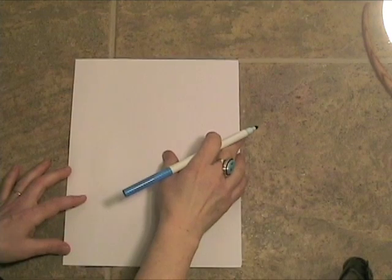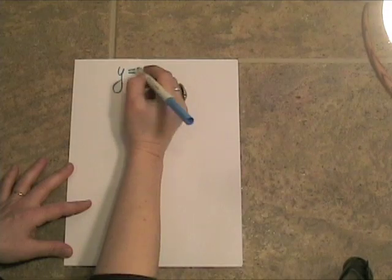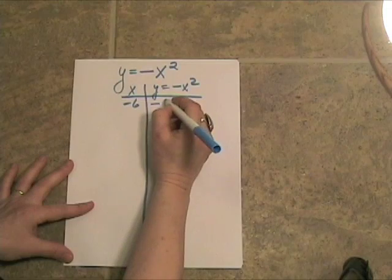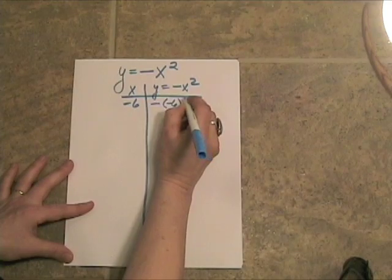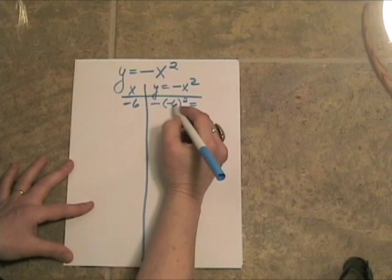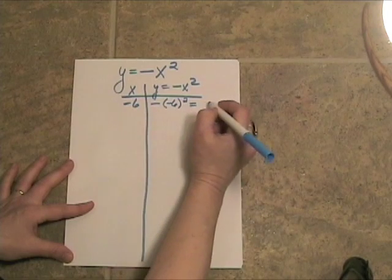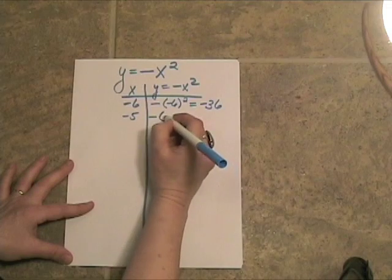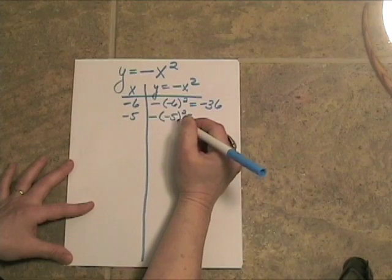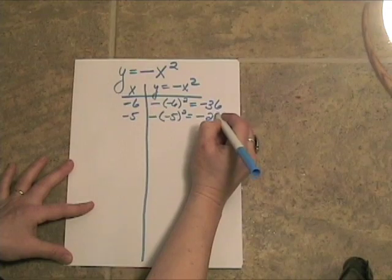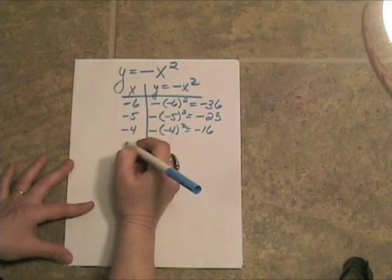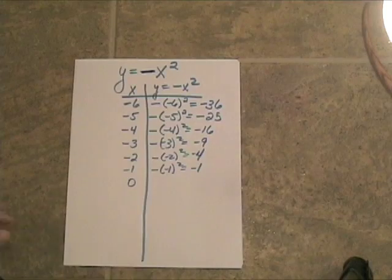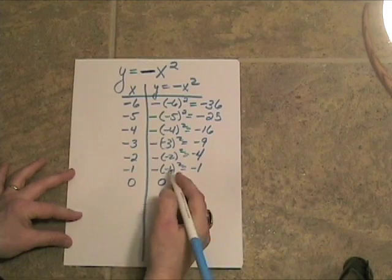The last thing we want to take a look at is what happens when y is equal to the opposite of x squared. At negative 6, y would be equal to the opposite of negative 6 squared. Well, you have to do the square first. So negative 6 times negative 6 is 36 and then the opposite of 36 is negative 36. Negative 5 squared, that would be the opposite of 25 which is negative 25. Negative 4 squared is the opposite of 16, which is negative 16. We know that you can't have negative 0. There's no such thing. So this would just be 0.